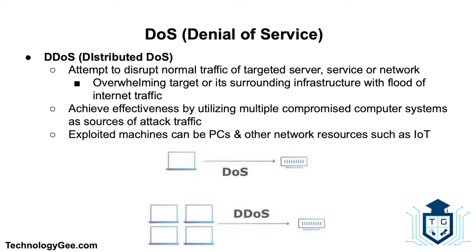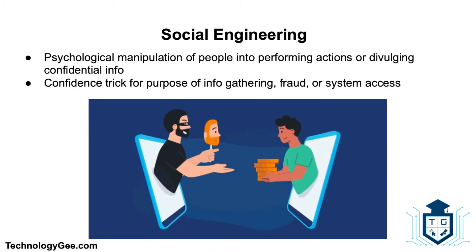A distributed denial of service (DDoS) attack is a malicious attempt to disrupt the normal traffic of a targeted server, service, or network by overwhelming the target or its surrounding infrastructure with a flood of internet traffic. DDoS attacks achieve effectiveness by utilizing multiple compromised computer systems as sources of attack traffic. Exploited machines can include computers and other network resources such as IoT devices. From a high level, a DDoS attack is like an unexpected traffic jam clogging up the highway, preventing regular traffic from arriving at its destination.